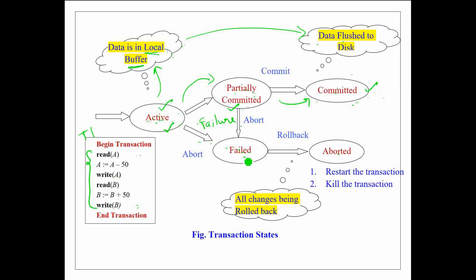When the transaction has entered into failed state, all the changes that were in local buffer have to be undone. So, to undo the changes made by the transaction, it is necessary to roll back the transaction.